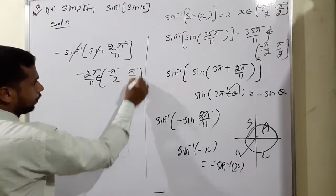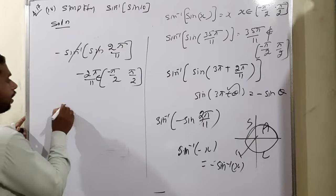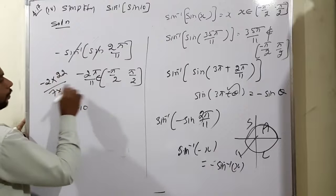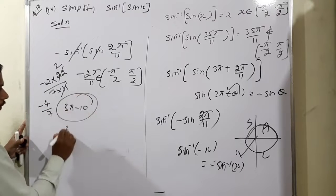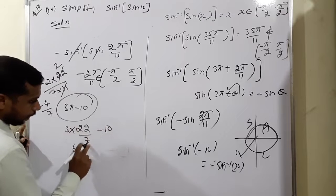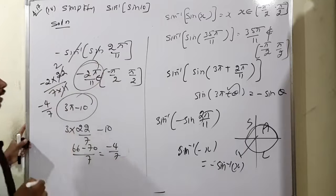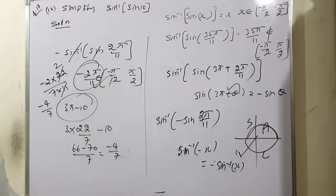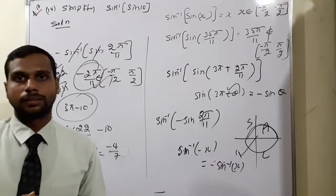In your book the answer is given as 3π − 10. Let me verify: 3π − 10 = 3(22/7) − 10 = 66/7 − 70/7 = −4/7. Our answer −2π/11 = −2(22/7)/11 = −44/77 = −4/7. Both match. So the answer −2π/11 is correct. This completes subdivision 4, which is worth 2 or 3 marks. Moving to the next example.